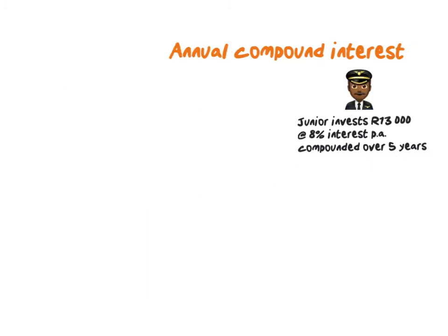Let's look at another example and see if we can write this a little bit shorter. If Junior invests 13,000 Rand at 8% per annum over 5 years — do you remember how to increase an amount by 8%? You add 8 onto 100. So 13,000 multiplied by 108 over 100 gives me 14,040. By saying 108 over 100 I'm just adding 8% on. But remember this is only for year one.